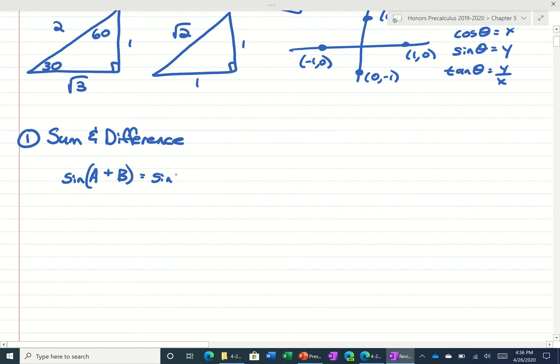is going to be the sine of the first, cosine of the second, same sign, and then cosine of the first, sine of the second. If it was sine of the first angle minus the second, you would use the same sign.